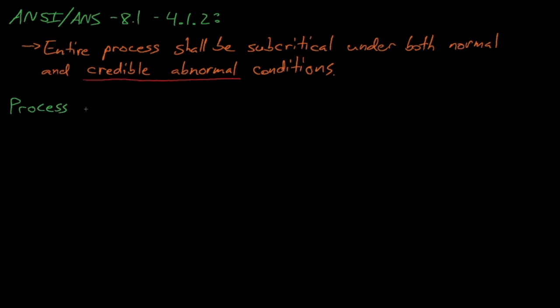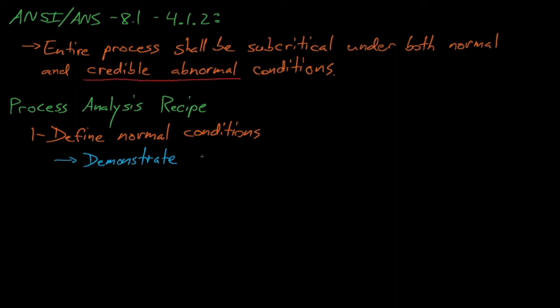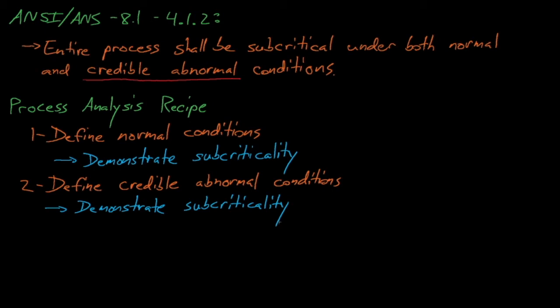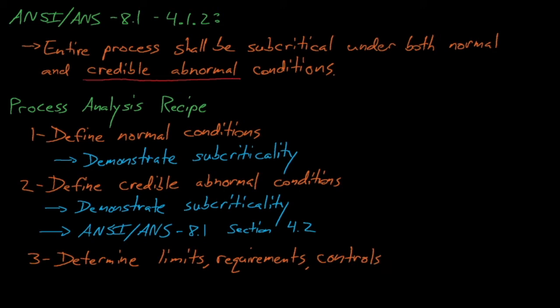The general recipe for process analysis is to first define the normal conditions for the fissile material operation and to prove that the system remains subcritical under these conditions. Next, we must define what constitutes a credible upset condition for this operation. We'll discuss how to quantify credible upset conditions later in this lecture, but the ANSI ANS 8.1 Standard Section 4.2 provides some guidance for classifying and evaluating credible upset design basis events. Having defined our credible upset conditions, we must also demonstrate that our system will remain subcritical during each possible upset condition. Lastly, we must define our subcritical safety limits and our criticality safety controls and requirements. This may be an iterative process, since our operating parameters and safety limits will depend on how our operation responds to the possible upset conditions.